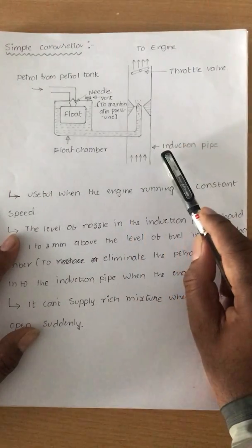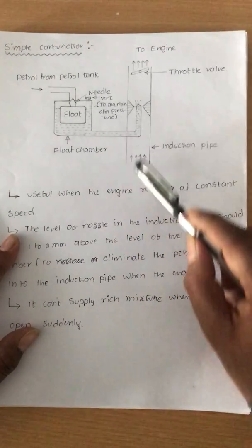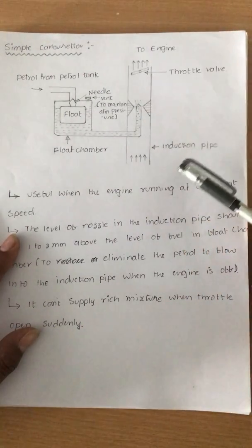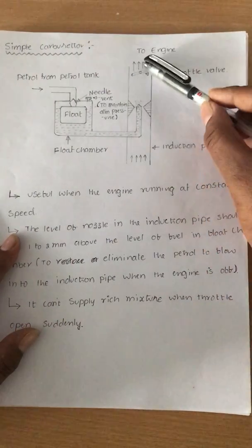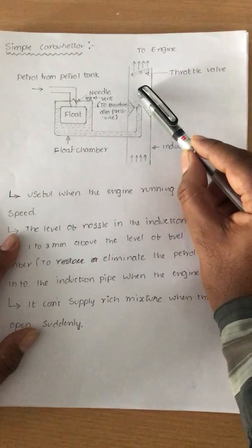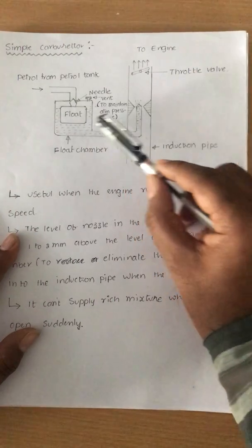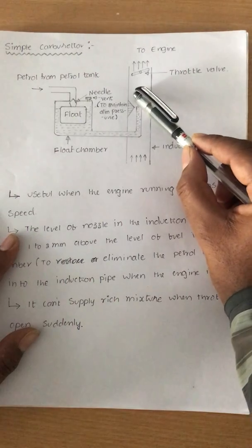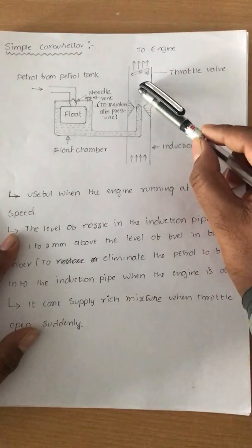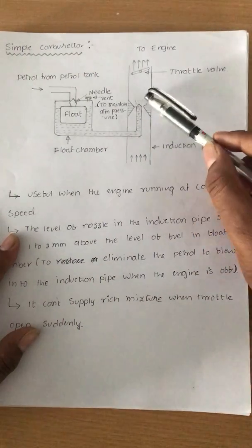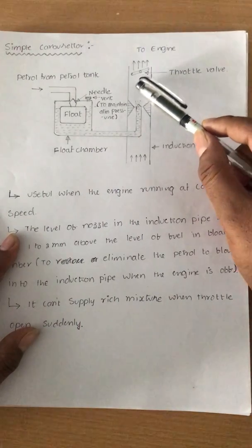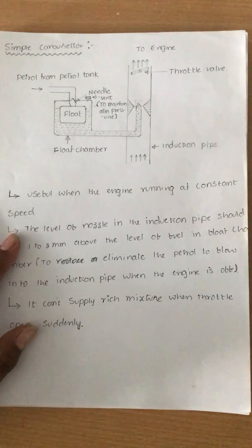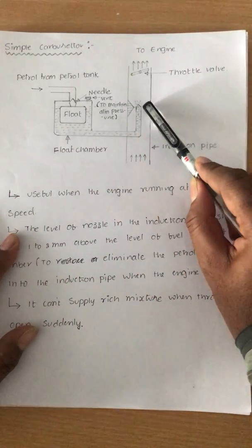This is the induction pipe. In the induction pipe, air is taken from the atmosphere and flows with high velocity. When air goes with high velocity, a low pressure is created. Because of this low pressure, fuel from the float chamber enters. The moment it comes out from the nozzle, this fuel is taken by the high velocity air stream. The fuel particles are mixed with the air and go to the combustion chamber, which is the engine.